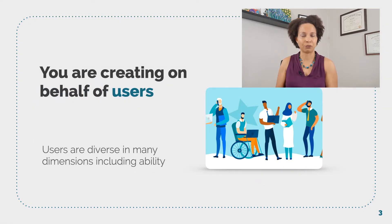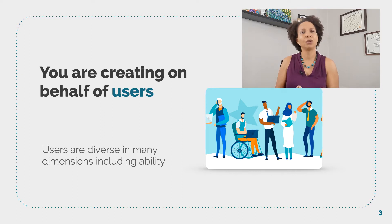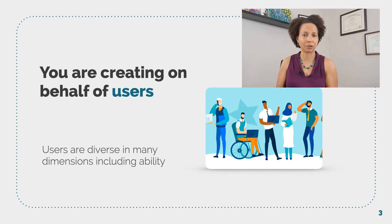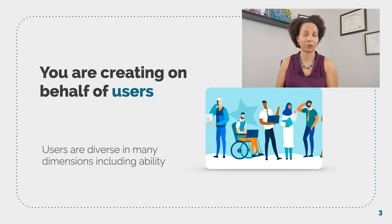As a computing professional, you are often, if not always, creating on behalf of others, sometimes known as users. Users are going to be diverse on several dimensions, which includes disability. This makes it imperative for you to understand that diversity and account for it in what you create, because a user's disability may impact how they interact with their computing device. The overall category of devices and tools used by people with disabilities are known as assistive technology, often shortened to AT. Let's briefly learn more about AT by looking at them in three big categories.